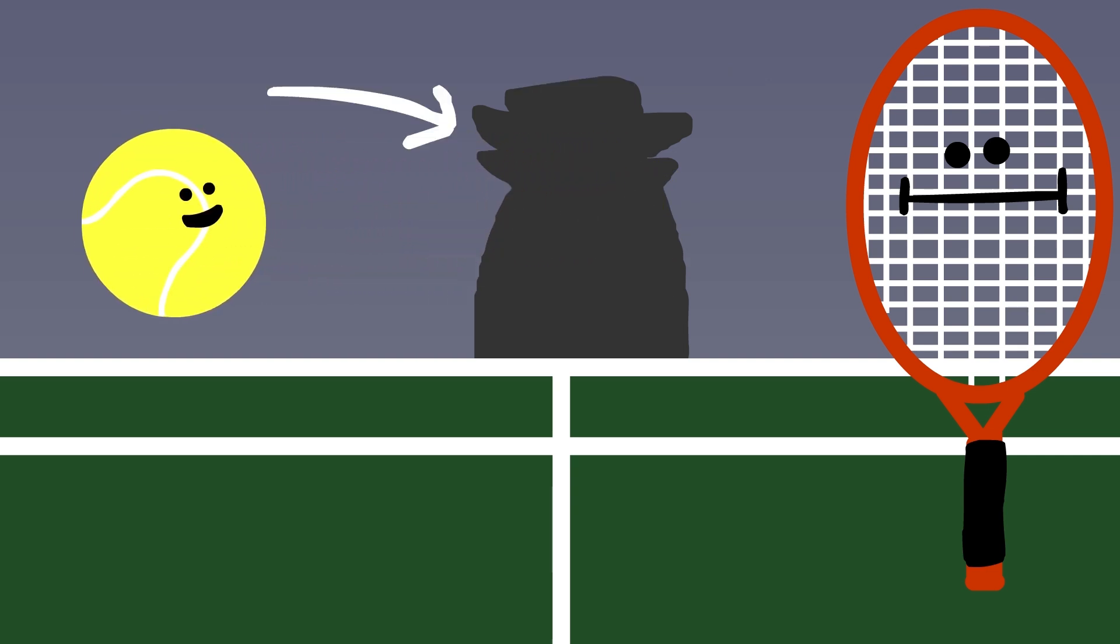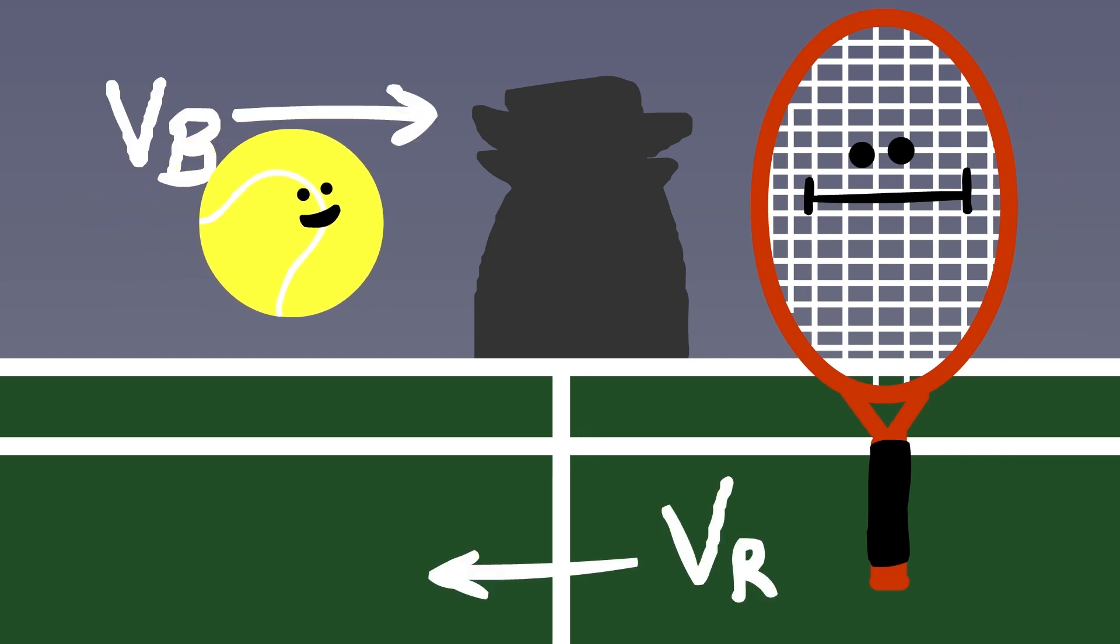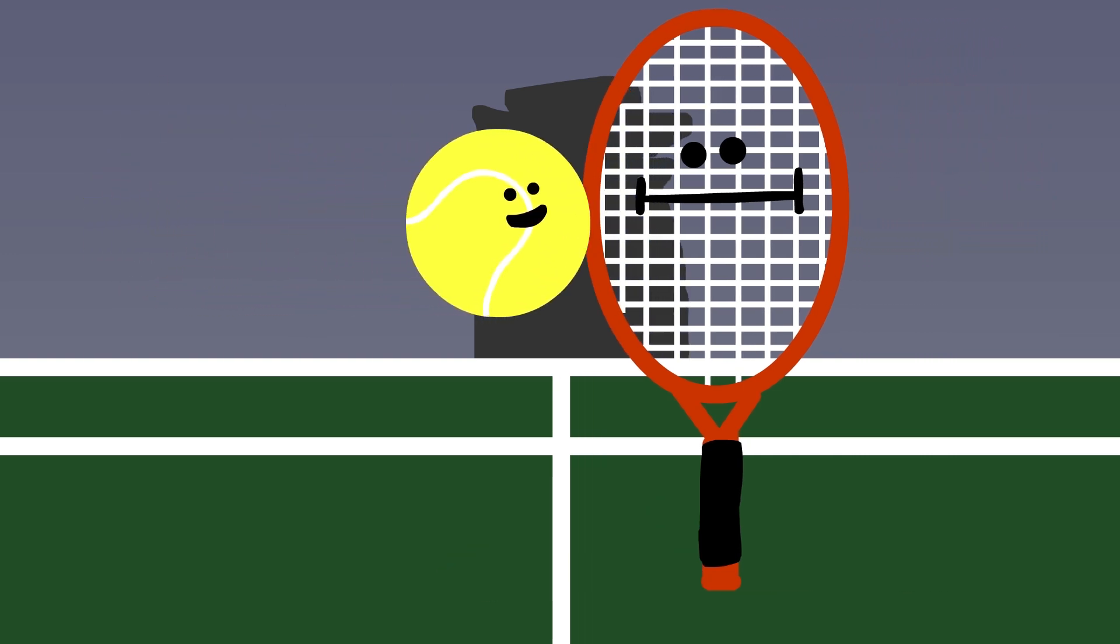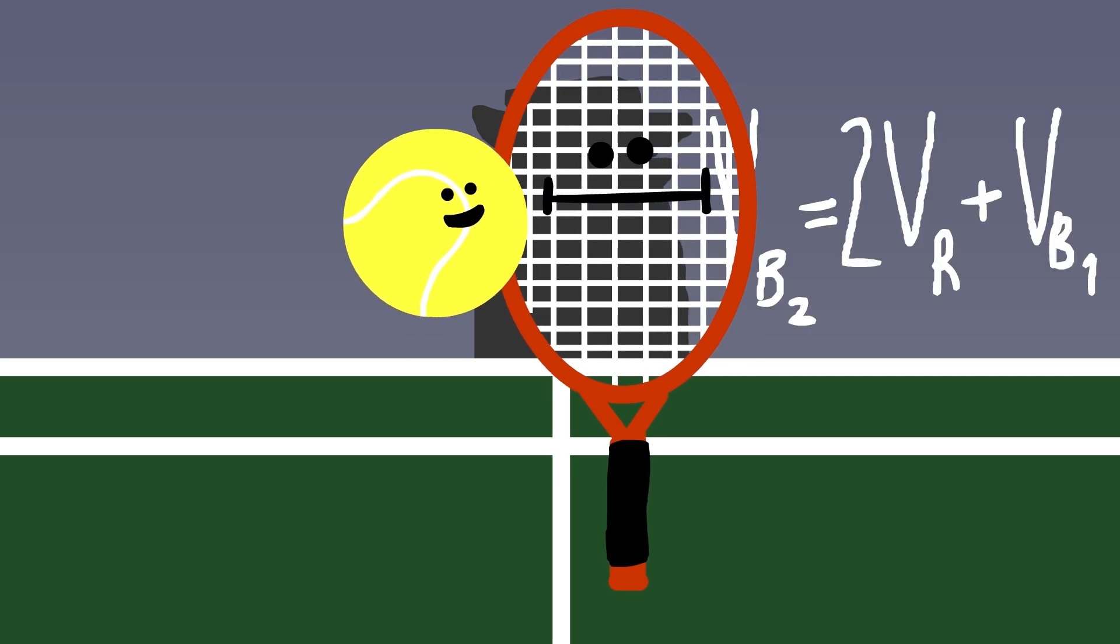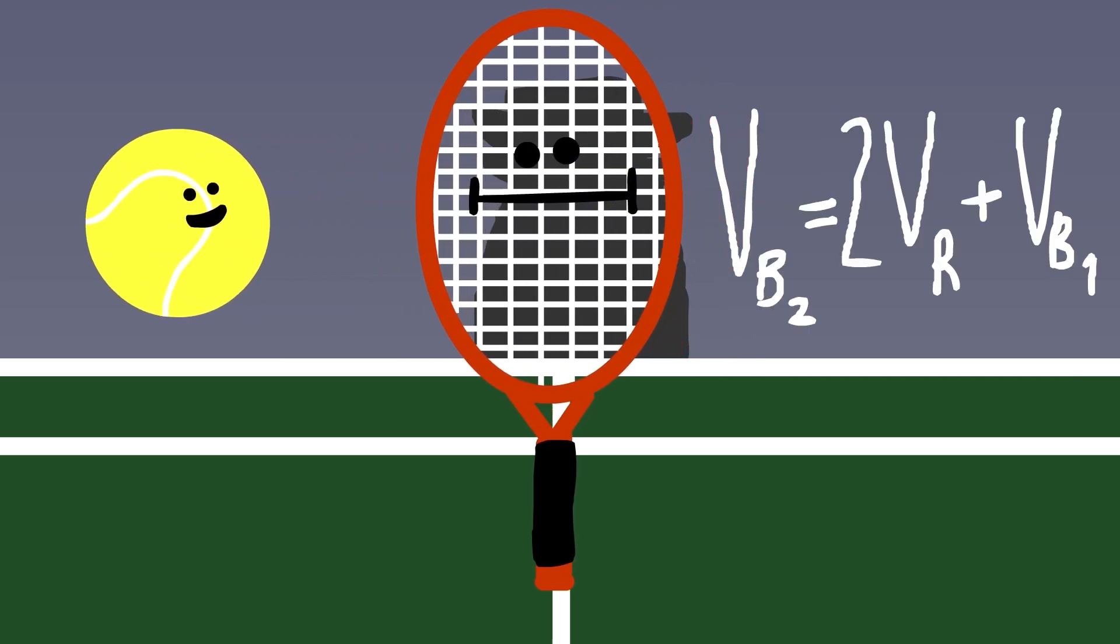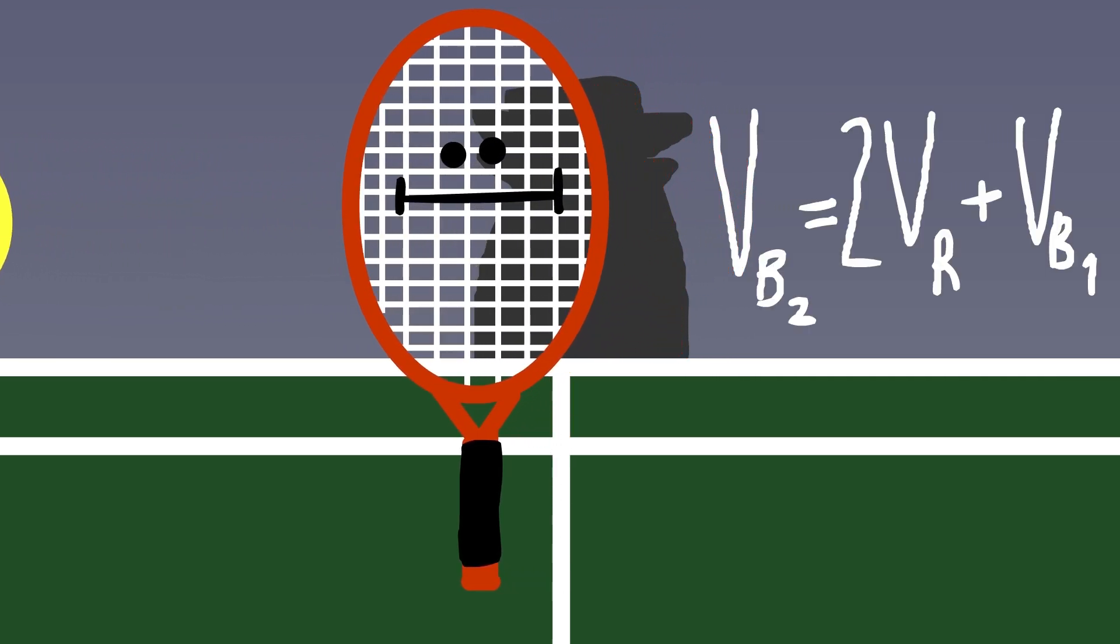But to you, the spectator, you see the ball approach the racket at a speed equal to the sum of the racket speed and the ball's speed. You then see the ball bounce off the racket at the approach speed plus the speed of the racket initially. Double the racket speed plus the ball's initial speed equals the final velocity of the ball.